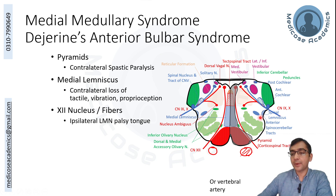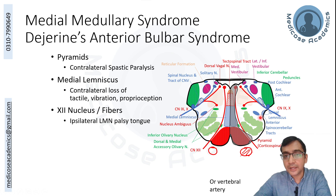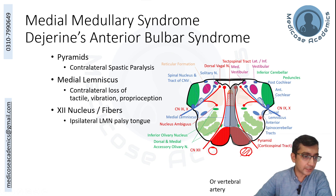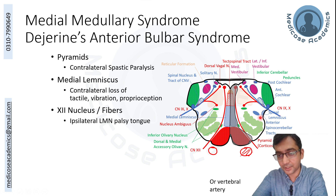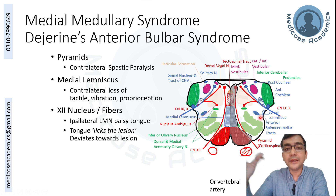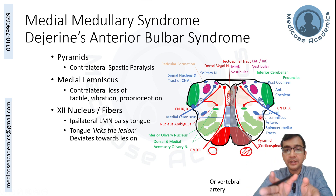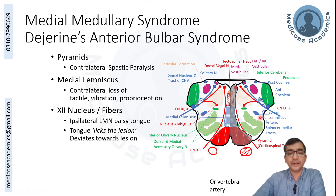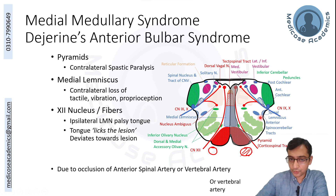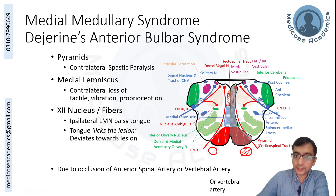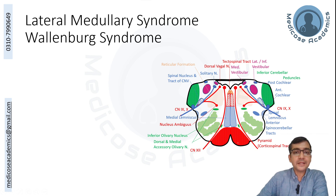There is ipsilateral lower motor neuron type paralysis of the tongue. To identify which side is paralyzed, remember the mnemonic: the tongue licks the lesion. If you ask the person to stick the tongue out, the unhealthy tongue deviates towards the paralyzed side. This syndrome is due to occlusion of the anterior spinal artery, formed by the fusion of the two vertebral arteries, or the vertebral artery itself.